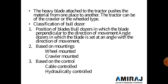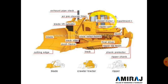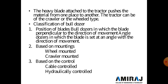One operating cabin is provided in the bulldozer and it is a totally diesel-operated machine. The heavy blade attached to the tractor pulls material from one place to another. The tractor can be of a crawler or wheel type.